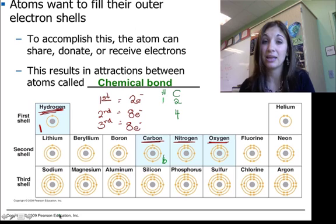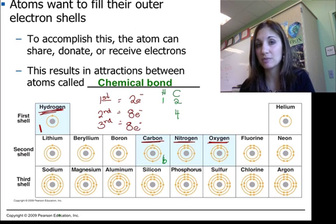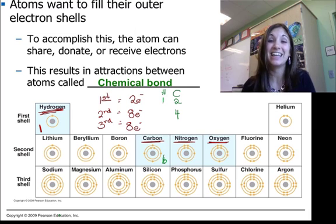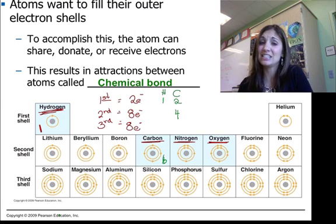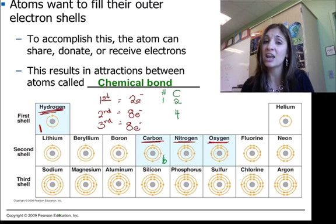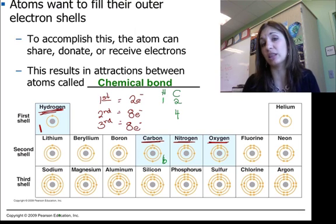Carbon isn't happy. It has four electrons and it needs eight to be satisfied. So it has to find another way to get those four electrons. It could give away its four, steal four, or if it's shared with another atom, it could share four electrons.